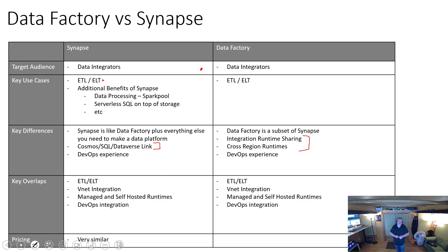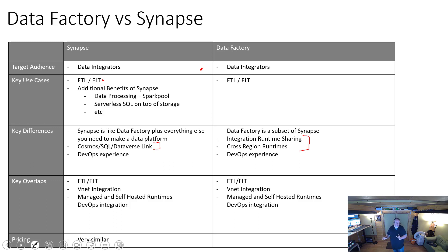Take Cosmos Link as an example — you could query it from Synapse, but you couldn't really do the equivalent in Data Factory; you'd have to pull the data into some kind of SQL database. So those extra features arguably mean you don't need to build a pipeline because you've got the link. Dataverse Link is really about the export into data lake from Power Platform, which makes it easy for your Synapse to use that data — whether you process it with a pipeline, query it with serverless SQL, or use Spark pools.